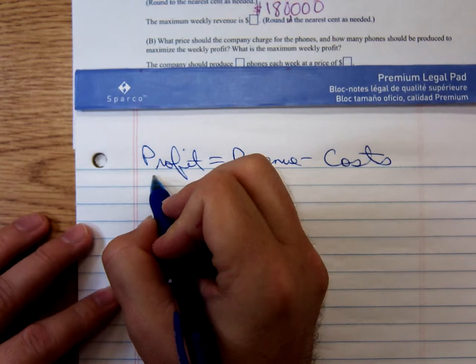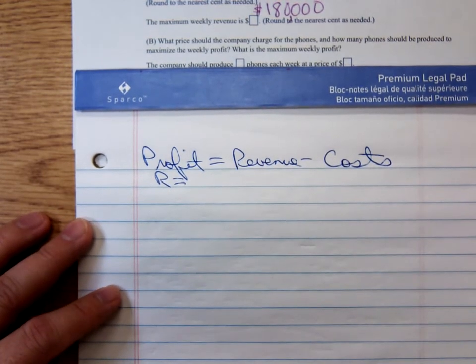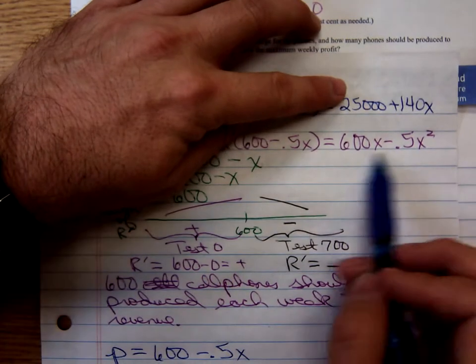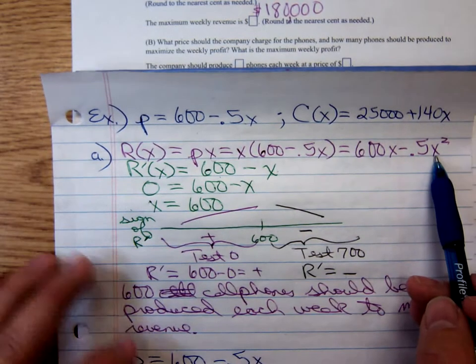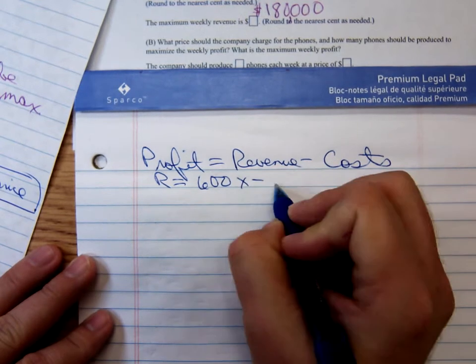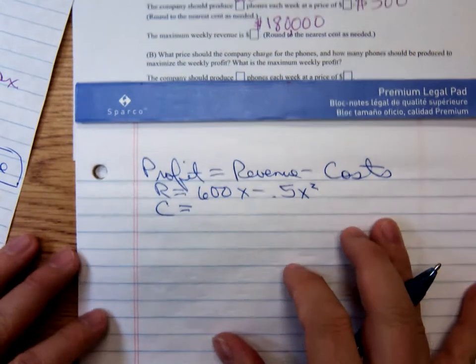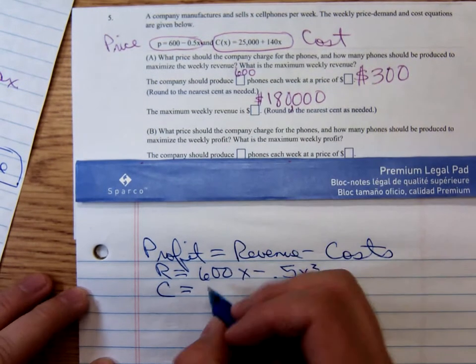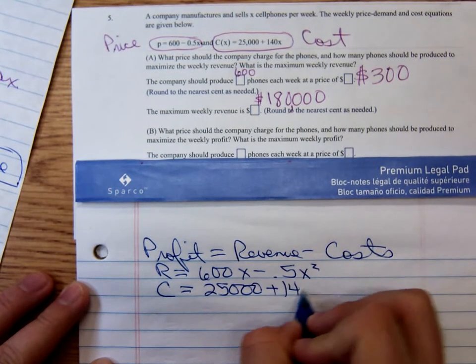And we know our revenue function. We found that in the previous problem. And when the previous part, it was that 600x minus 0.5x squared. That was the first thing we did in part A. So 600x minus 0.5x squared. We know the cost function, not because we found it, but because they gave it to us. The cost function is 25,000 plus 140x.